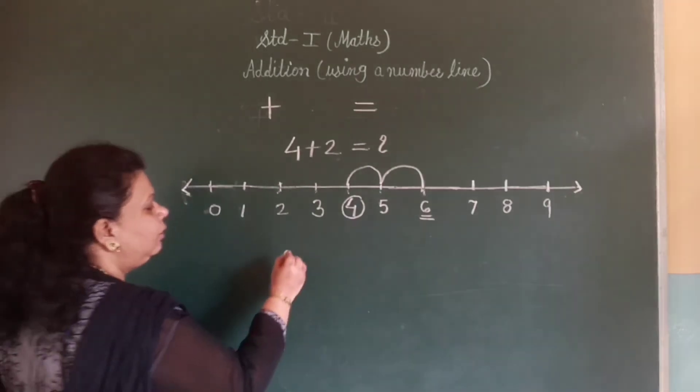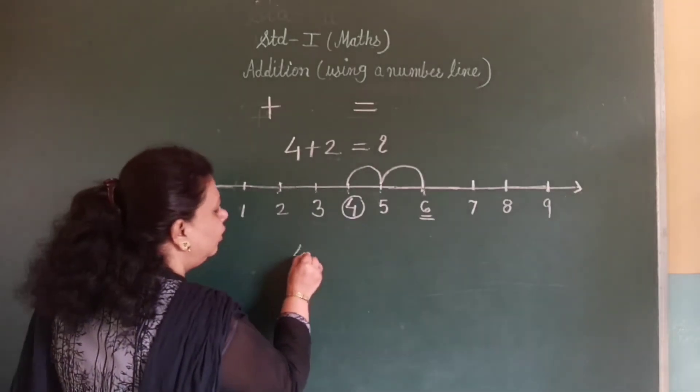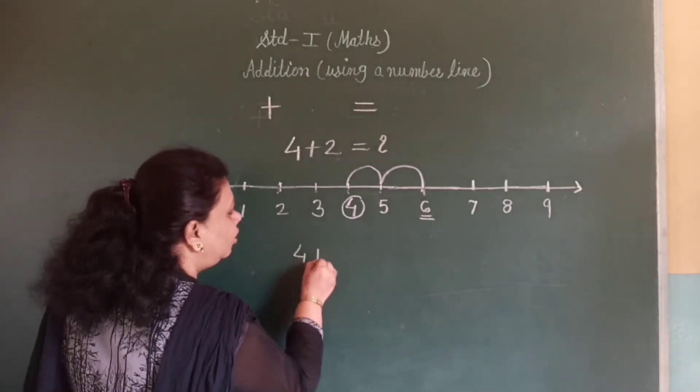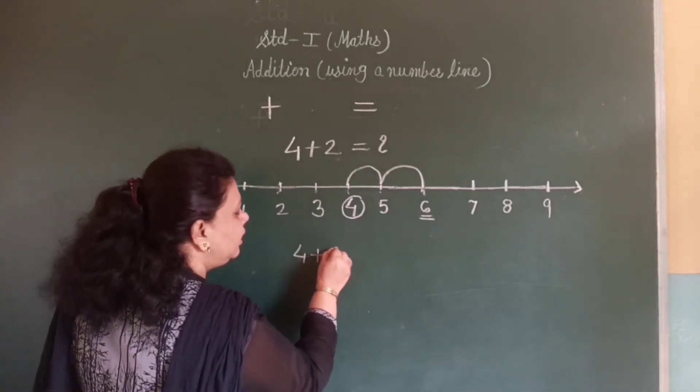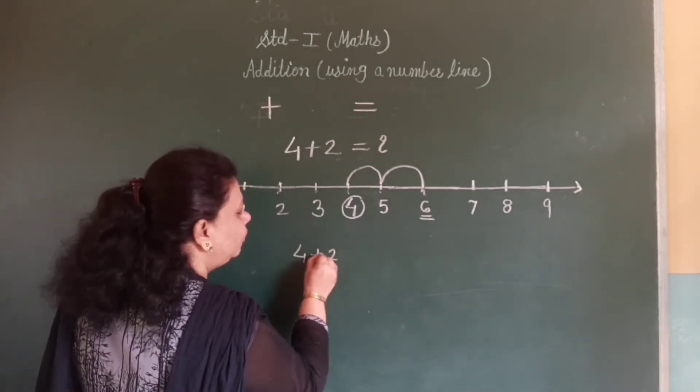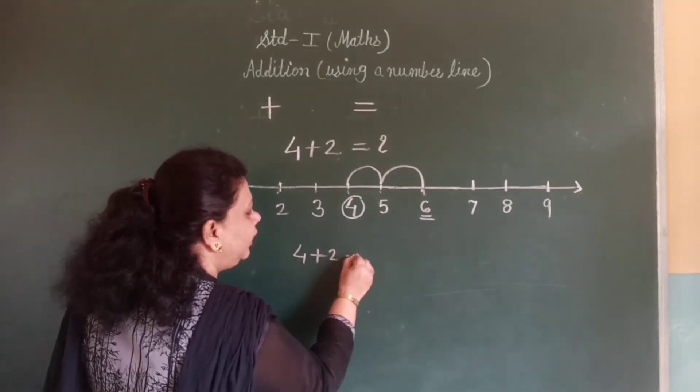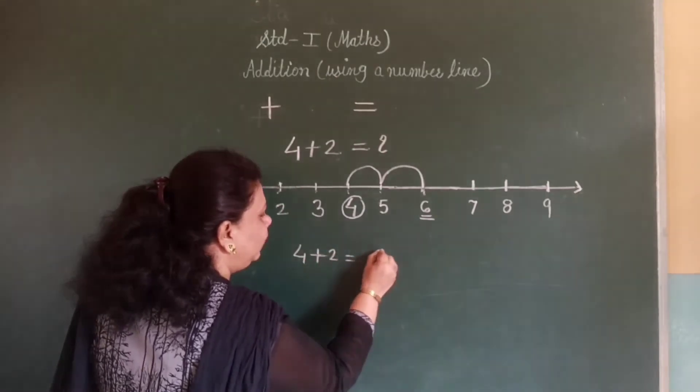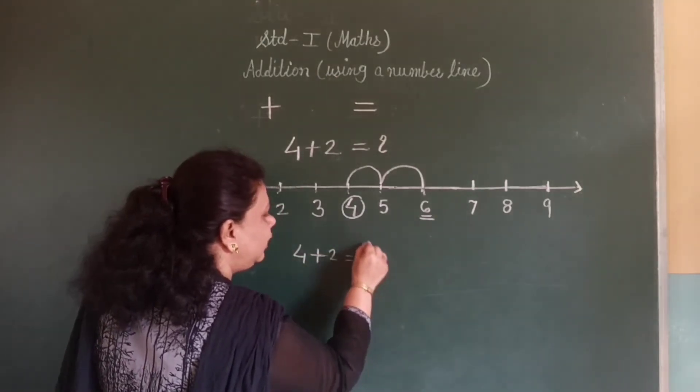So the answer is 6. 4 plus 2 is equal to 6.